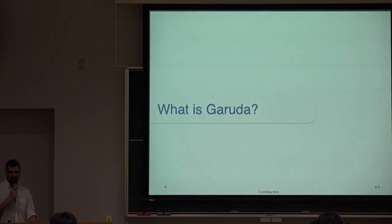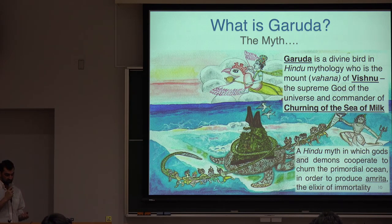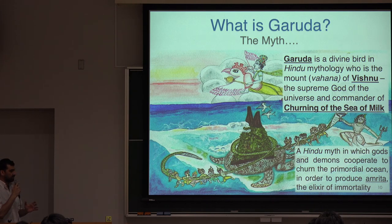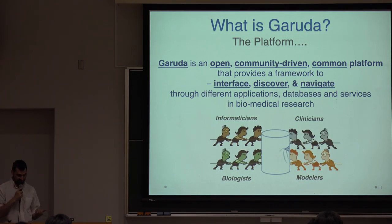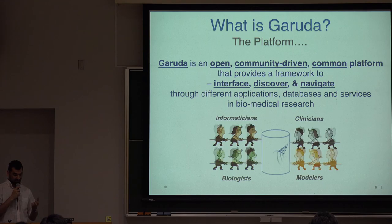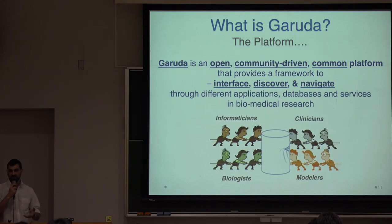A little bit of historical background: Garuda is a divine bird from Hindu mythology. There is a major event called the churning of the sea of milk, where the gods and the demons cooperate in order to create the elixir of life. In this event, Vishnu, the top deity of Hindu mythology, uses Garuda as a platform in order to oversee this process. Similarly, we call our platform Garuda. It is an open community-driven platform which allows all the different stakeholders, like informaticians or modelers, to collaborate in order to produce better biology and better science.